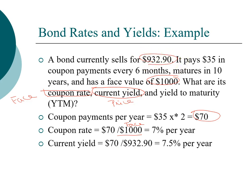So the current yield is the coupon payment, $70, divided by the price of the bond, $932.90. So we have a current yield of 7.5%. Remember that the current yield represents the income yield component of the bond.